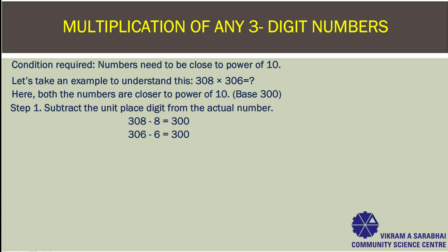Step 1: Subtract the unit place digit from the actual number. That is 308 minus 8, you get 300. And 306 minus 6, you get 300.